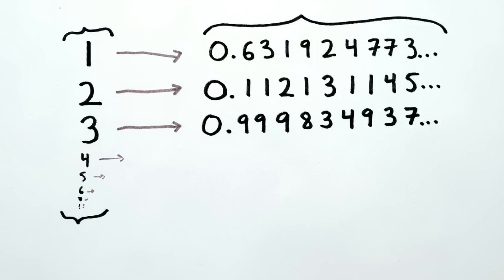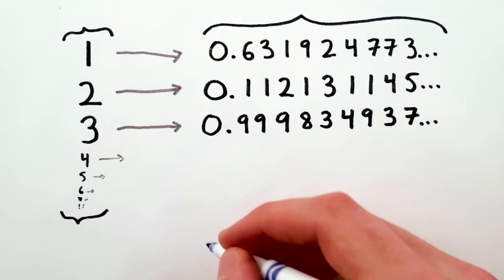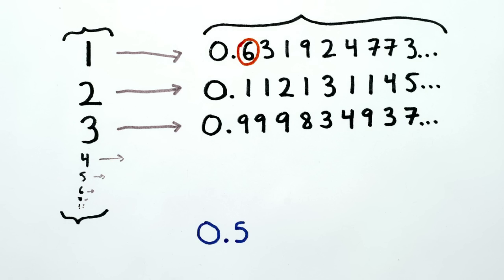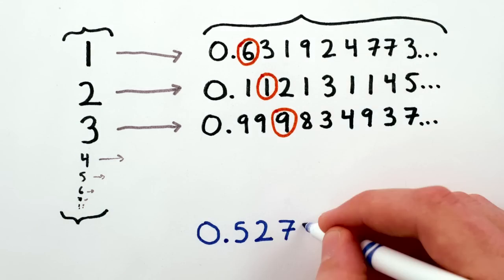But no matter what numbers between zero and one we've drawn lines to, we can always write down a number between zero and one that disagrees with the first digit here, the second digit here, and the third digit here, and so on.